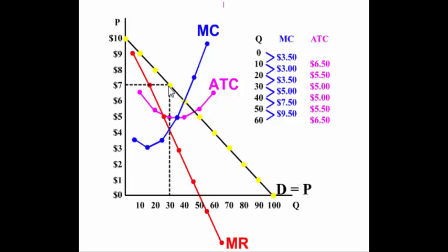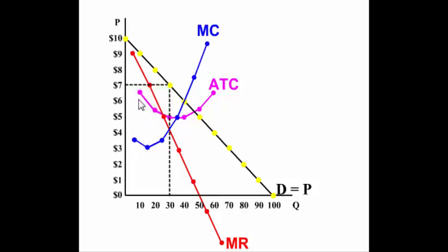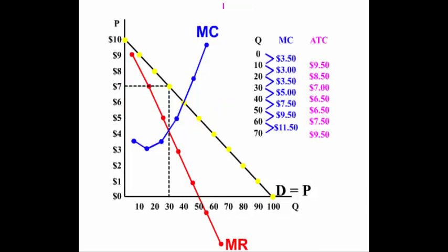Notice that the price is above the average total cost at the profit-maximizing quantity — this means the monopoly is earning a profit. If the price is seven and the quantity is 30, then total revenue is 210 dollars. The average total cost at this quantity is five, so five times 30 is 150 dollars. That gives an economic profit of 60 dollars: 210 in total revenue minus 150 in total cost.